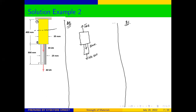From this diagram, using the conditions of equilibrium, we can say that FAB — when going up we take that direction as positive, and when coming down it is negative. Therefore: FAB minus 55 kilonewtons minus 40 kilonewtons equals zero. From here, FAB equals positive 95 kilonewtons.